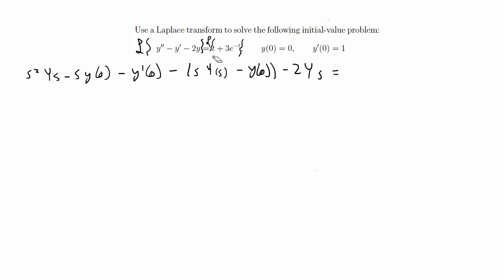The right hand side — we're going to take the Laplace transform of t, which is to the first power, so that's 1 over s to the n+1, giving 1 over s squared. Plus 3 times the Laplace transform of e to the negative t, which is 1 over s plus 1.